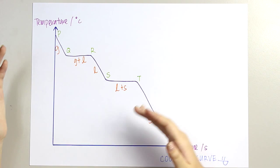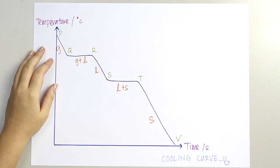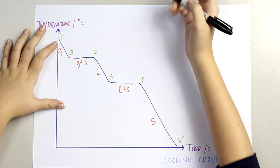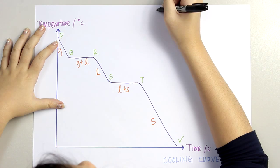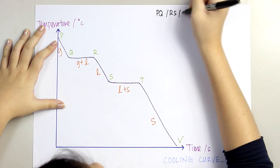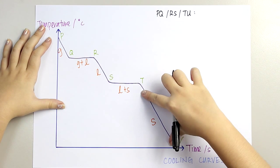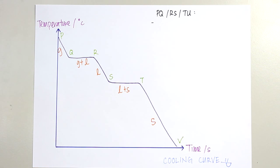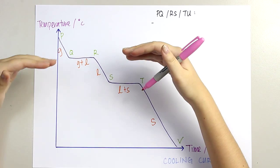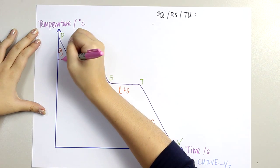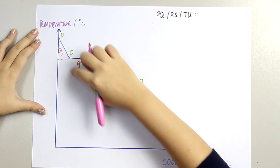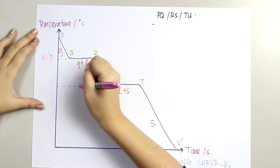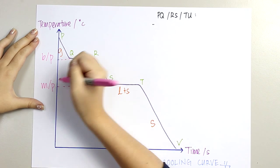To describe the cooling curve, we divide it into two paragraphs. For the first paragraph, we describe stages PQ, RS, and TU — those three increasing stages. Before you describe, remember to label where the boiling point and melting point are. When gas starts to change form, that is the boiling point. When liquid starts to change form, that is the melting point.